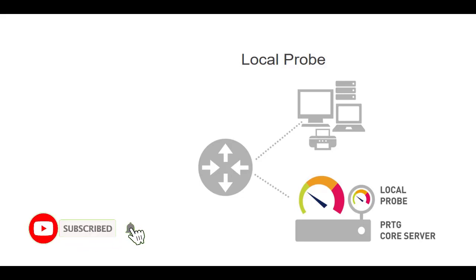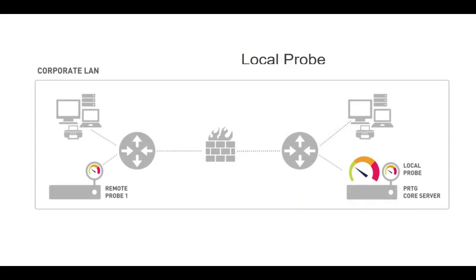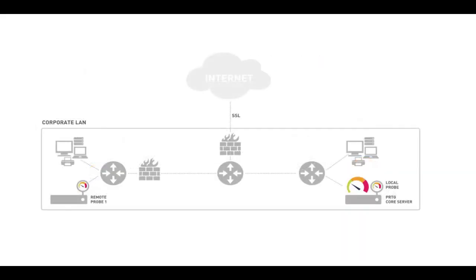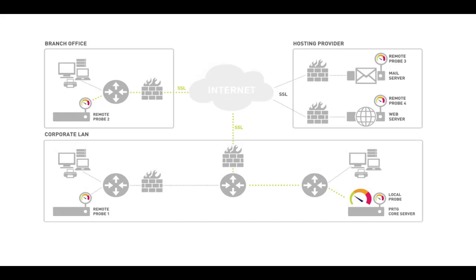For example, if you have a ping sensor, it is the local probe that sends out the ping, receives the reply, and forwards the result to the core server for analysis. To reach remote networks or networks protected by a firewall, you can extend PRTG by adding remote probes. Sensors on remote probes communicate with devices in the remote location, and monitoring results are relayed to the central core server. The connection between a remote probe and the core server is encrypted with SSL, even over the public internet.